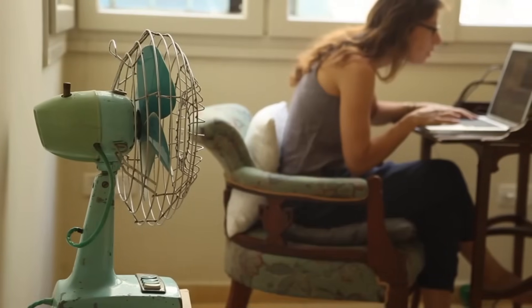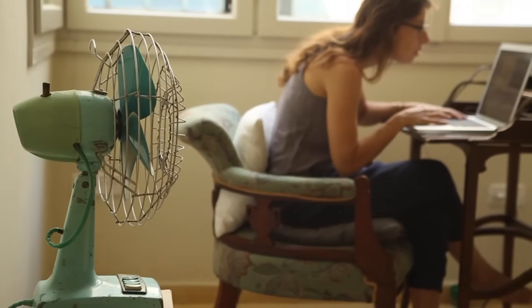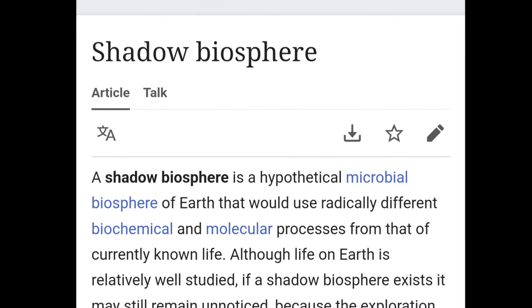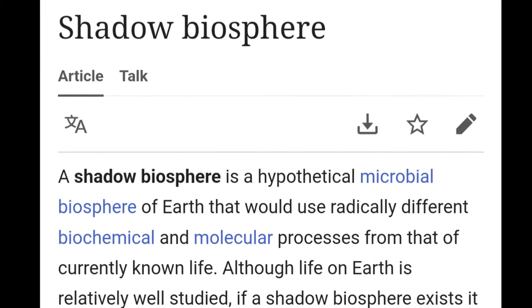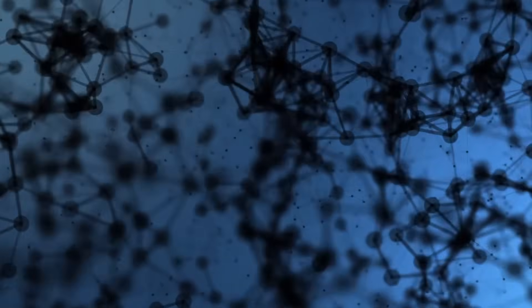Expanding on this, researchers are actively exploring the potential for alternative biochemistries. Some scientists have proposed the idea of shadow life, which refers to hypothetical organisms that could exist on Earth, utilizing unconventional biochemical pathways. These organisms might co-exist with familiar life forms, but operate on an entirely different set of molecular principles.